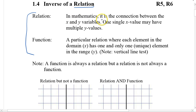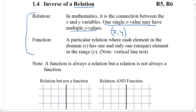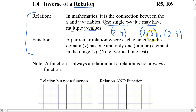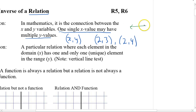So for a relation, in mathematics, it is the connection between the x and the y variables. One single x value may have multiple y values — this is true just for the relation. So for example, if we arrange x and y in the form of ordered pairs, we could define a relation by all the ordered pairs. We could have (2, 3) and another ordered pair of (2, 4). So the same x value can be connected to more than one different y value. Another way of describing a relation is that it does not have to pass the vertical line test.